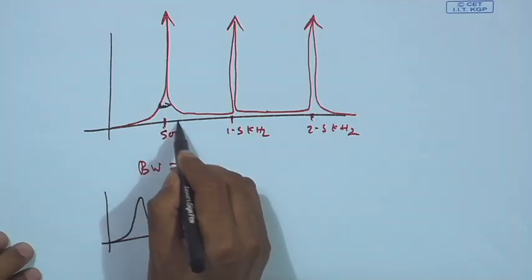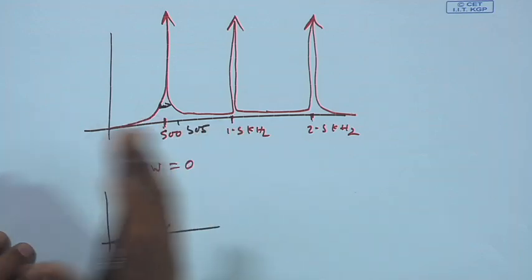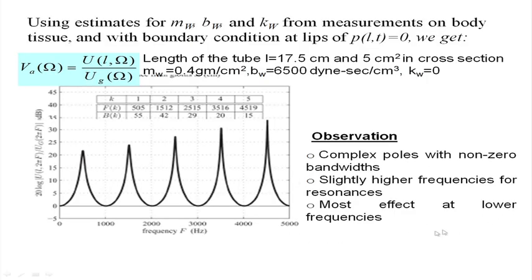When loss is introduced, some bandwidth is generated, so the poles become complex with nonzero bandwidth. The frequency shifts slightly toward the higher frequency side — for example, instead of 500 Hz it may be 500.5 Hz. Lower frequencies are most affected: lower frequency bandwidth will be increased more compared to higher frequency. I have not yet considered friction loss, viscous loss, and thermal loss.